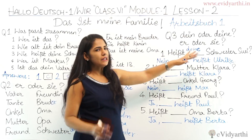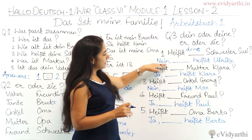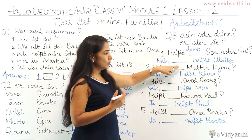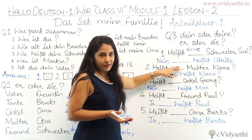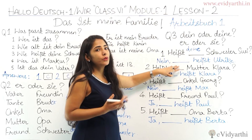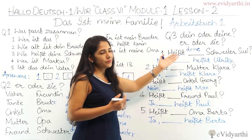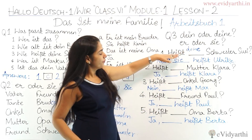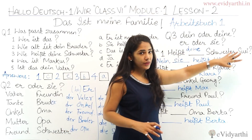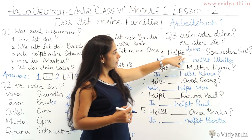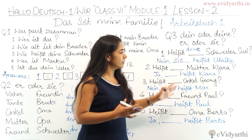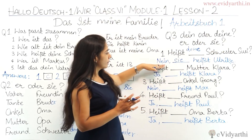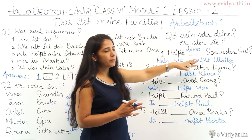Nein — 'Sie heißt Ulrika.' No, her name is Ulrika, she is called Ulrika. So here you use 'sie' — she. The full exchange: 'Wie heißt deine Schwester, Susi?' — 'Nein, sie heißt Ulrika.'